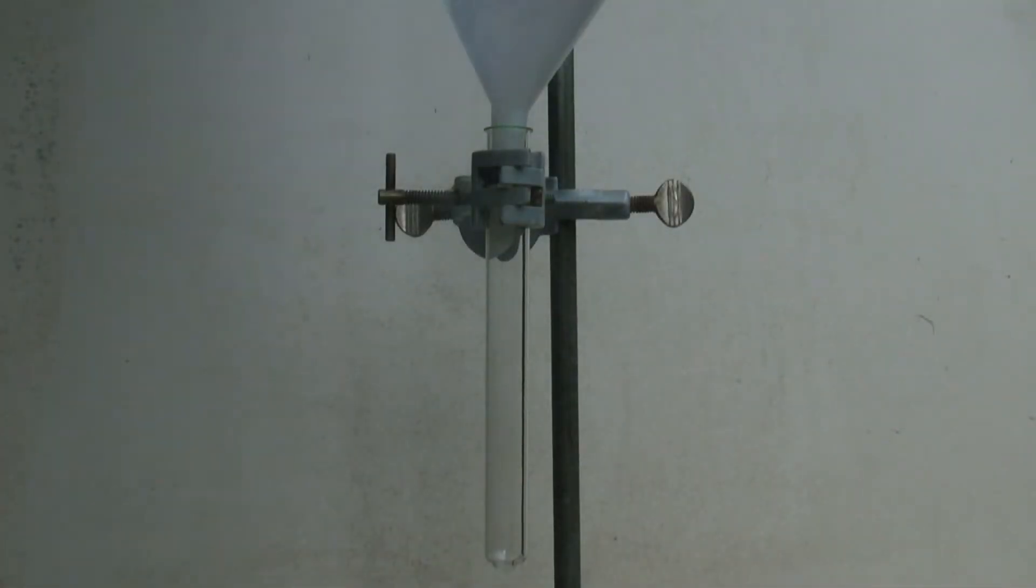The mixture is then added to a test tube which is attached to a ring stand. On top of the mixture a layer of sand is added. Then the tube is tilted.